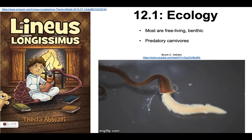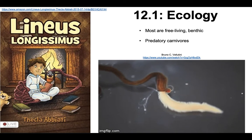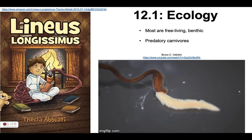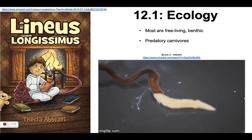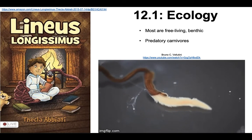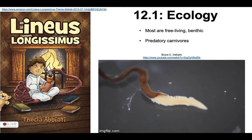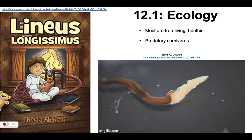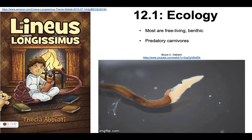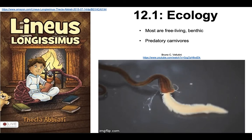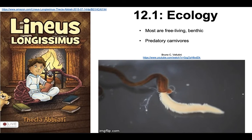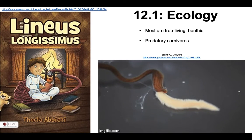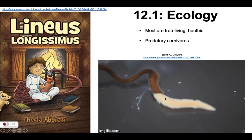Some of them can be commensal with other invertebrates, and there are a few species that are parasitic. For the most part, they are found in shallow water where they'll glide along the substrate, hide under rocks and algae, or burrow into soft sediments. While some are parasitic or commensal, for the most part this group is predatory carnivores, as you can see in this GIF.